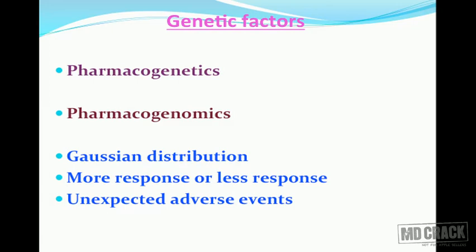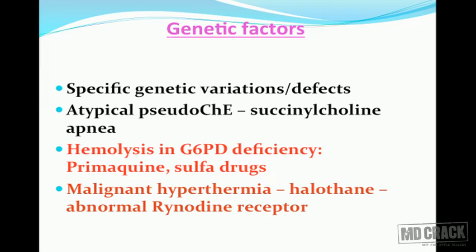The next important factor is the genetic factor. We have a separate science called pharmacogenetics, and another called pharmacogenomics. Pharmacogenetics deals with genetic factors in the patient that affect drug effects. Pharmacogenomics applies drug variation response to individual patients to modulate individual drug therapy. According to Gaussian distribution, some persons may produce too little or too much response. There are specific genetic variations concerned with drug metabolism — for example, atypical pseudocholinesterase enzyme failing to metabolize succinylcholine, leading to succinylcholine apnea.